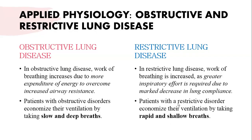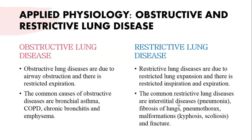Coming to applied physiology — obstructive versus restrictive lung diseases. Obstructive lung diseases are due to airway obstruction with restricted expiration; common causes are bronchial asthma, COPD, chronic bronchitis, and emphysema. Restrictive lung disease is due to restricted lung expansion, with restricted inspiration as well as expiration; causes include interstitial lung disease, fibrosis, or malformation of the thorax such as kyphosis, scoliosis, or fractures.